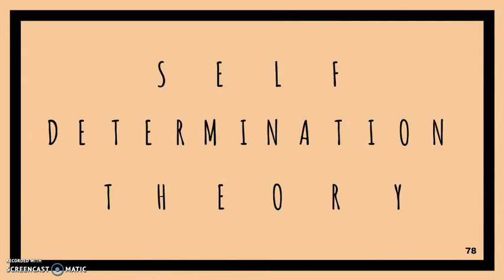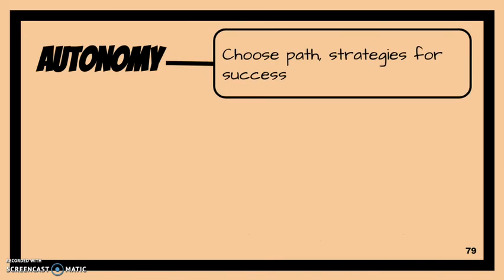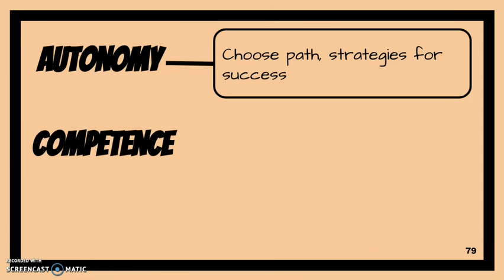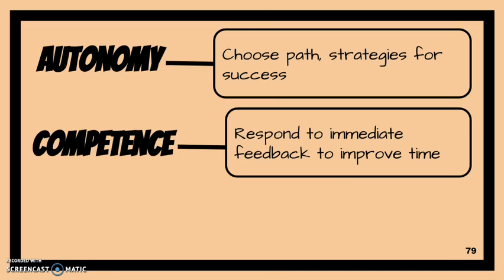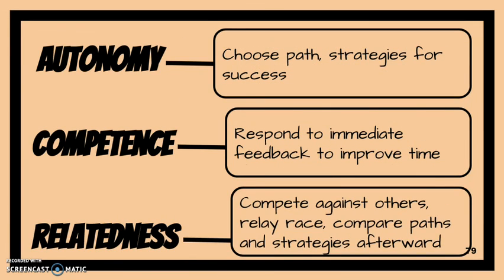Before we leave the race and escape dynamic, let's check in on how it connects to the factors relating to intrinsic motivation. Remember that we want to give students as much choice as possible — in the race and escape dynamic, students can choose their path and choose the strategies for success to reach the finish line or escape as effectively as possible. We also want to meet students with the right level of challenge; in this dynamic, students respond to immediate feedback to improve their time. Finally, students feel connected to something bigger than themselves through the competitive nature of the dynamic and the inevitable reflection period that follows, where they can compare the paths and strategies they took with others.